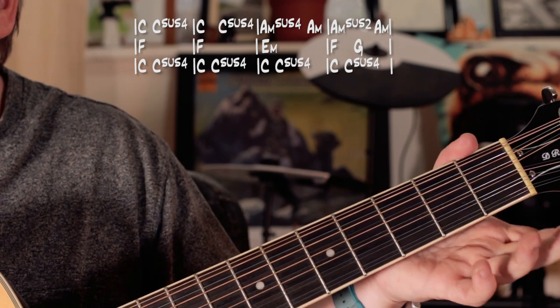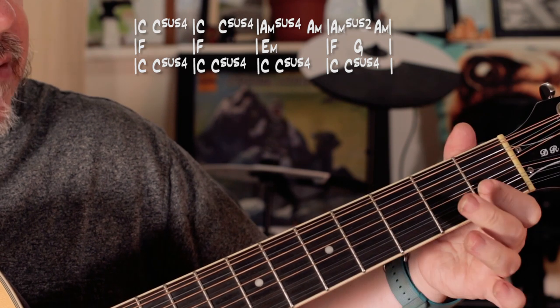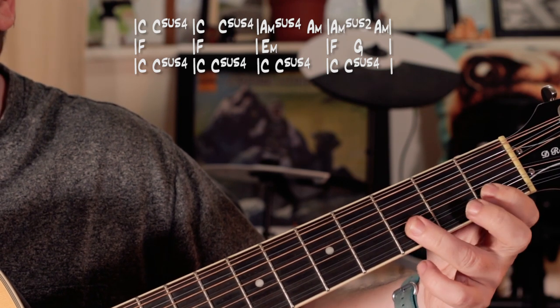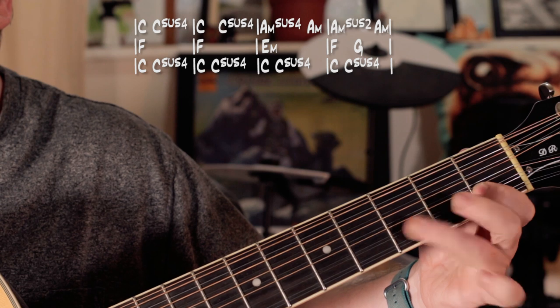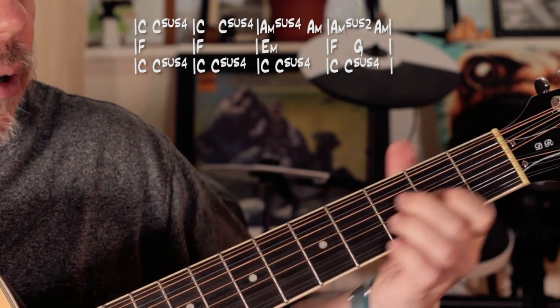And two beats of just a normal A minor with my first finger on the C note, and then I take my first finger off to get a B note, and then put my first finger back on to get a C. So I've got this little melody going over the top.